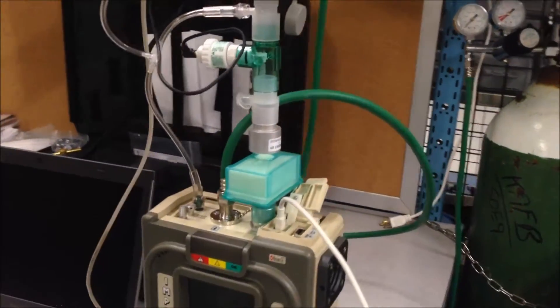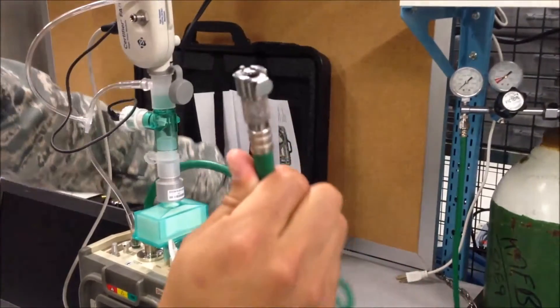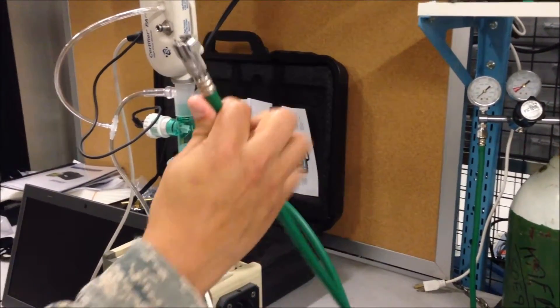Connect the other Y-tubing connector that separates from the hose to the high flow module.